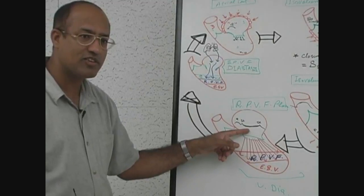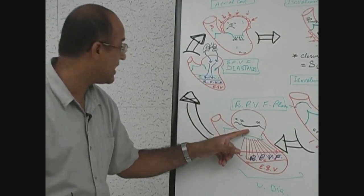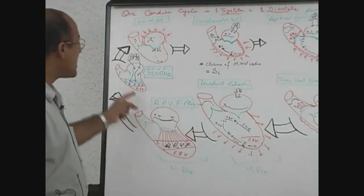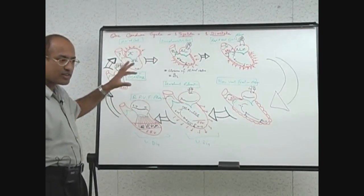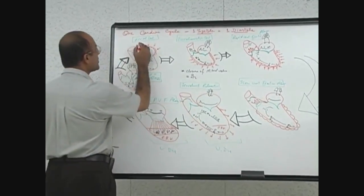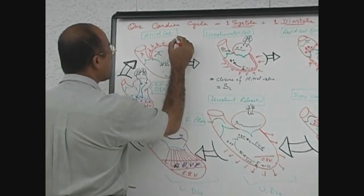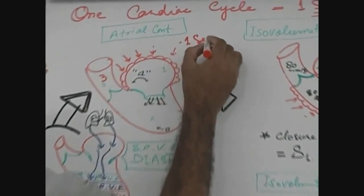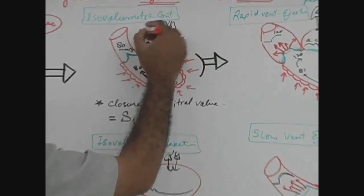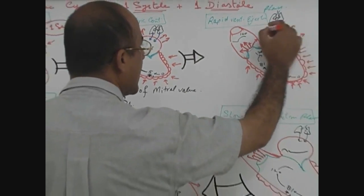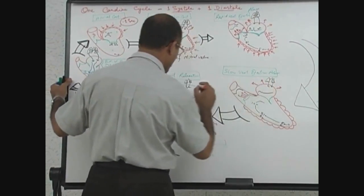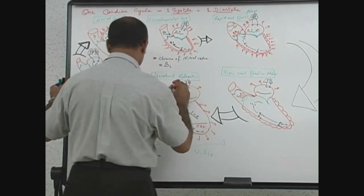Ventricular diastole has started, but it is still atrial diastole. This is also atrial diastole — and also atrial diastole — so atrial diastole is very long. When your heart rate is around 72 beats per minute, atrial systole is only 0.1 seconds, while atrial diastole covers all these other phases. In all these phases the atria are relaxed, so atrial diastole is a very long phase.